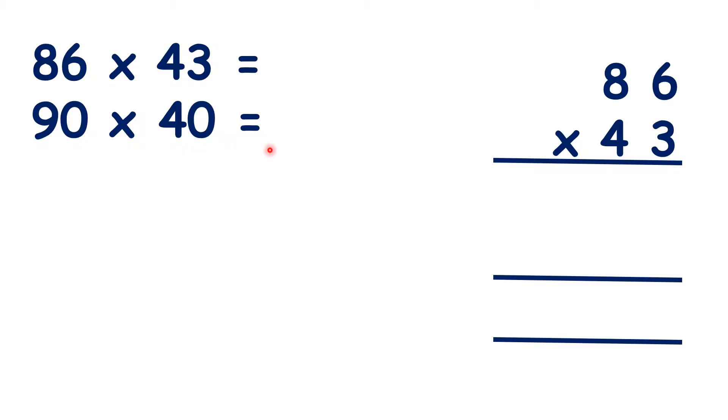Now, 90 times 40 is 3,600, because we know that 9 times 4 is 36, and then, if there are a total of 2 end zeros in the question, we'll need 2 end zeros in the answer.